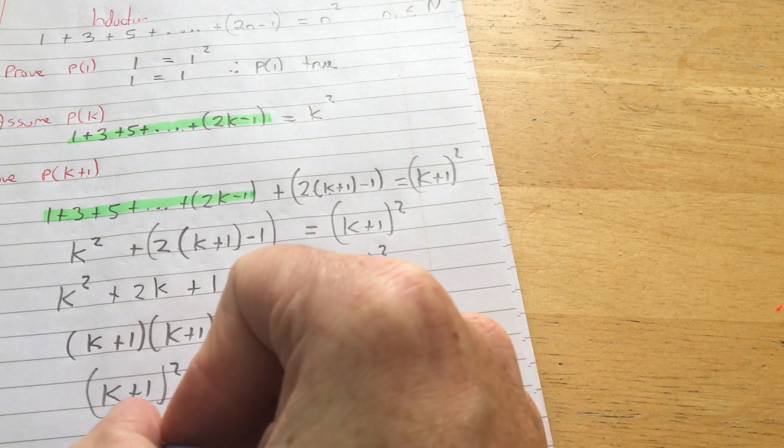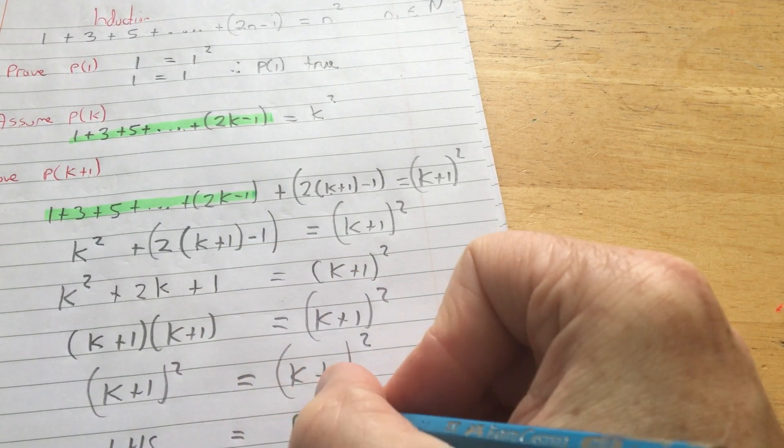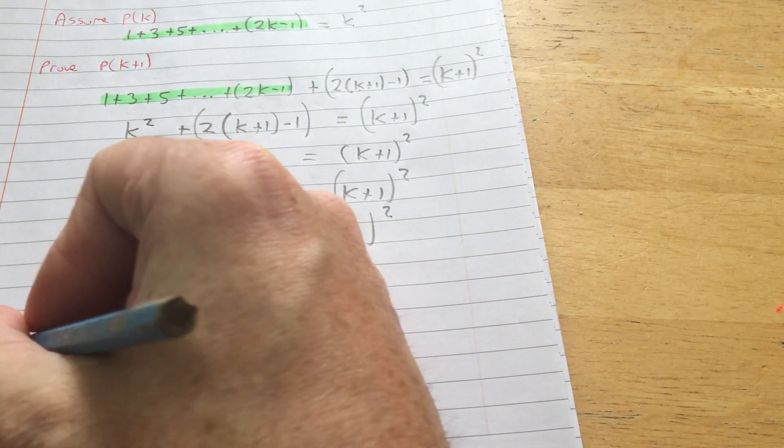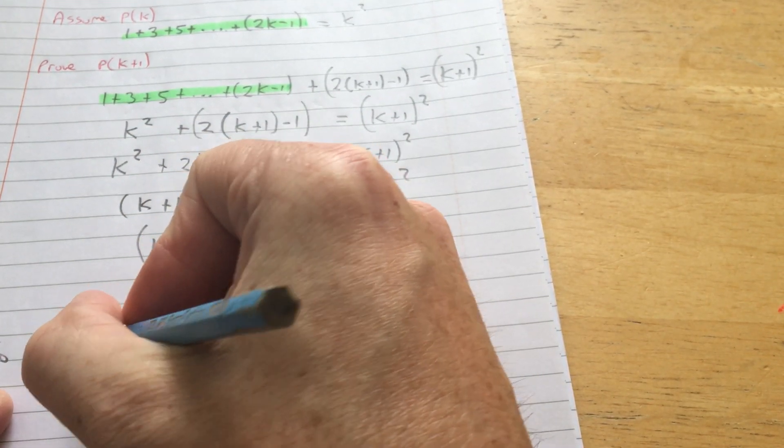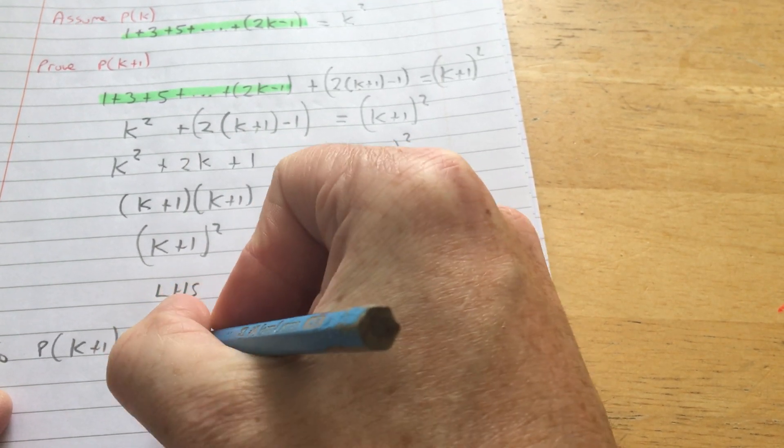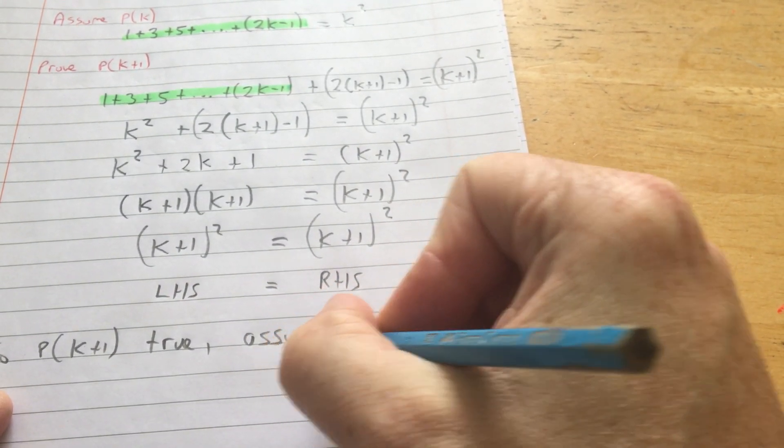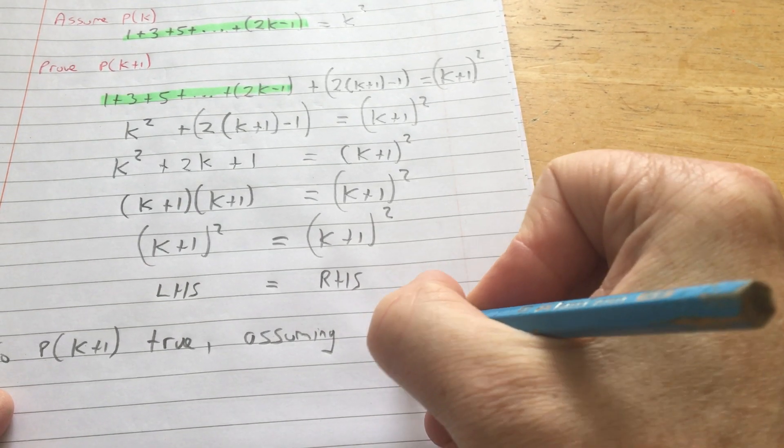So therefore, the left-hand side equals the right-hand side. So, P(k+1) is true, assuming P(k) is true.